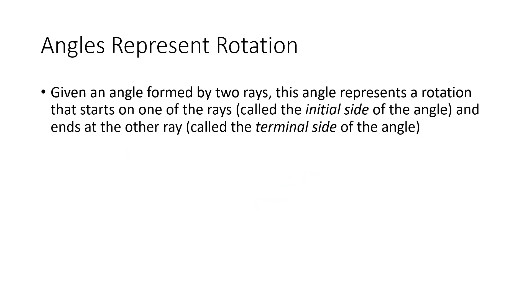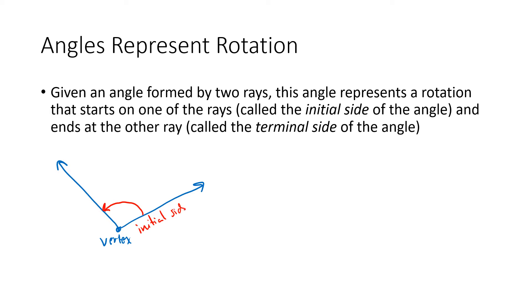If we have an angle represented by two rays, then that angle represents a rotation that starts on one of the rays — we call that the initial side of the angle — and ends at the other ray, which we call the terminal side. So we can think of those two rays as representing, for example, the rotation that starts on the initial side and ends on the terminal side.